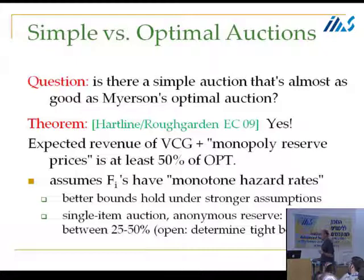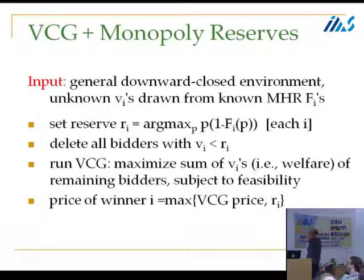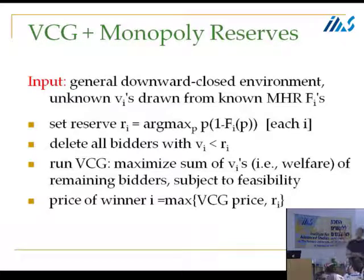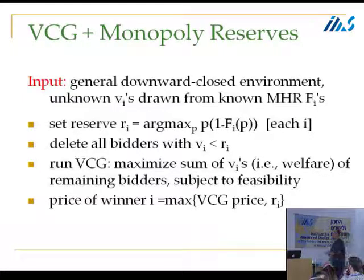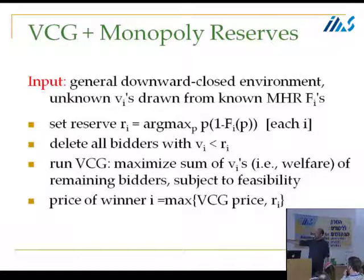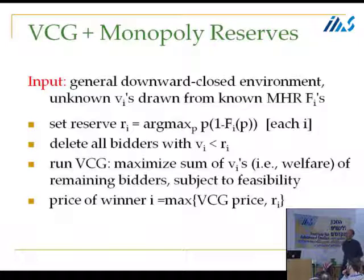What do I mean by VCG supplemented with monopoly reserves? First, what's a monopoly reserve? As we saw in Anna's talk: suppose bidder one was the only bidder in the world and you were trying to sell it one good, and that bidder's valuation was drawn from distribution F1. Ask yourself: if I had to slap a price tag on this good and make a take-it-or-leave-it offer, what would be the optimal price? You choose p to maximize p times the probability of sale, which is 1 minus the CDF at p.